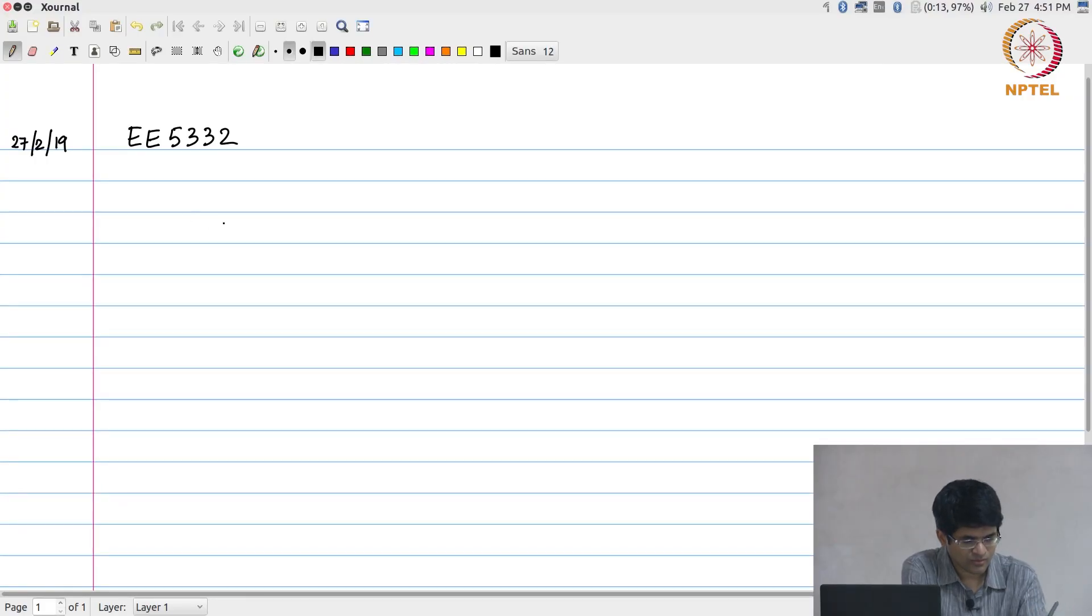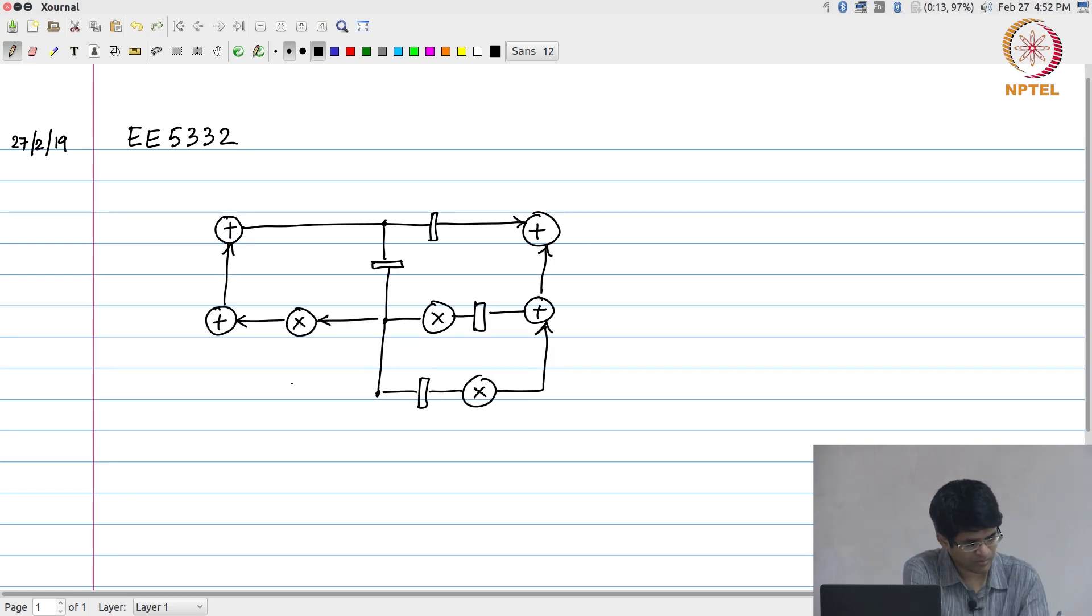To do that I am going to quickly just redraw the circuit that we started with. The numbers that I am writing up here are just identifying numbers for the different nodes. I will just call this node number 1, 2, 3 and 4. In other words nodes 1 to 4 are adders 5, 6, 7 and 8 are multipliers.